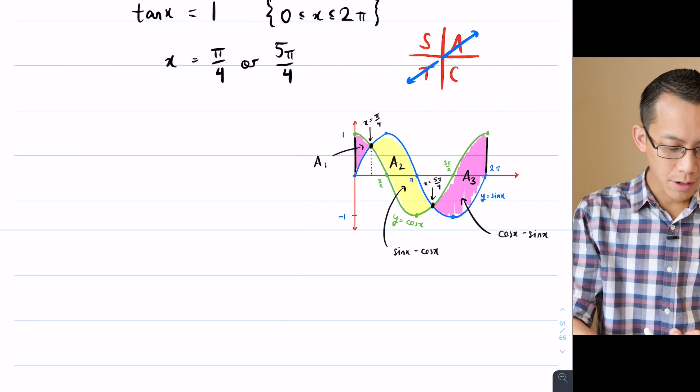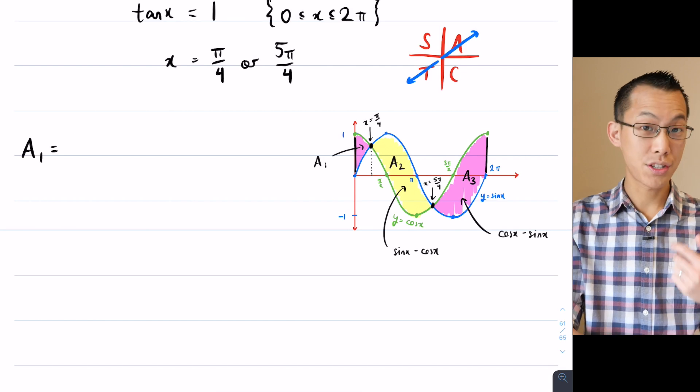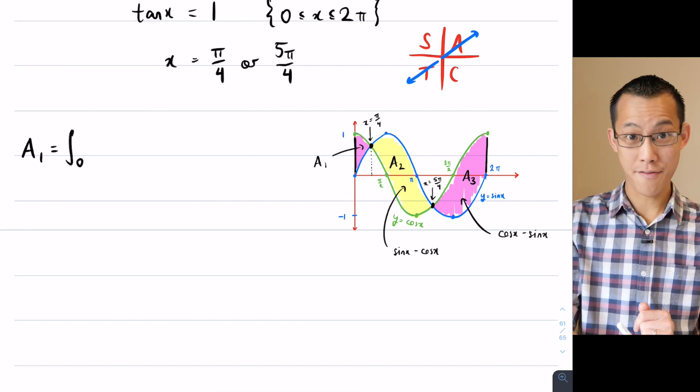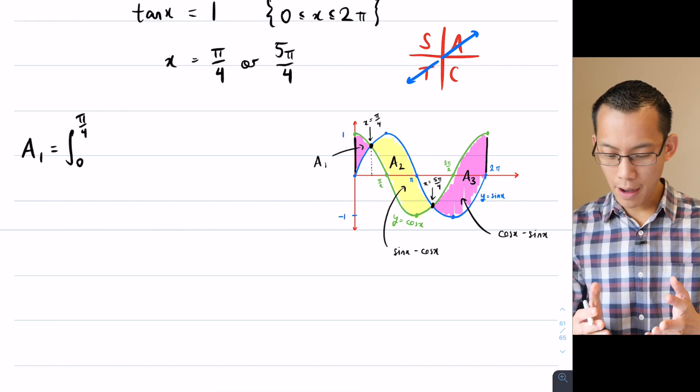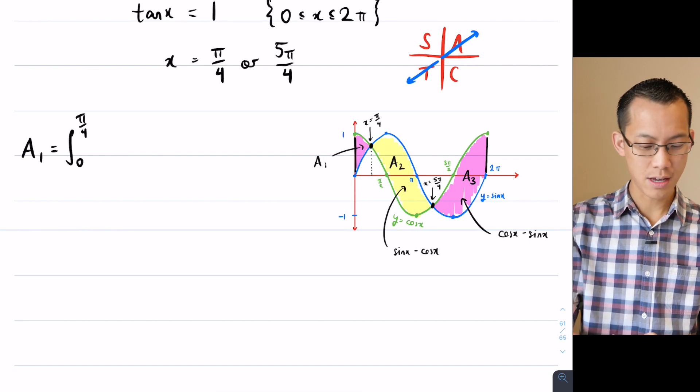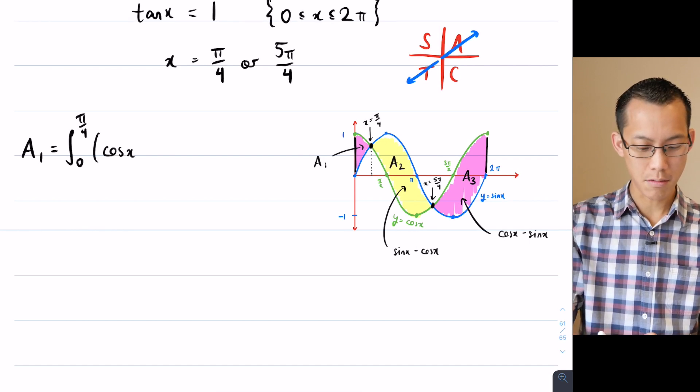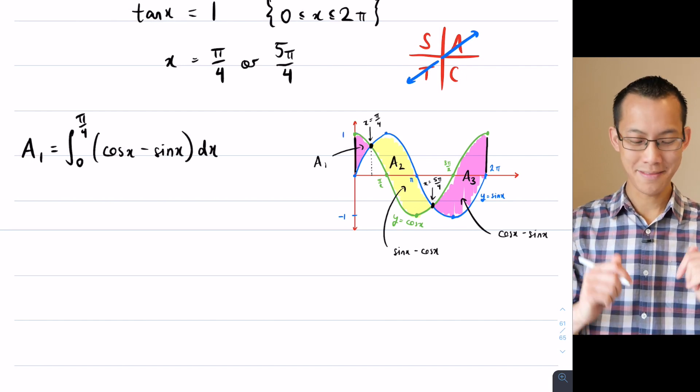Okay, so I'm going to work out A₁. Think about it carefully. I'm going to start from 0 and then I'm going to go to that first point of intersection which I found at π on 4. For this part of the graph, it's going to be green take away blue, which is cos take away sine. So here comes the integral: cos x minus sine x with respect to x. There's A₁.